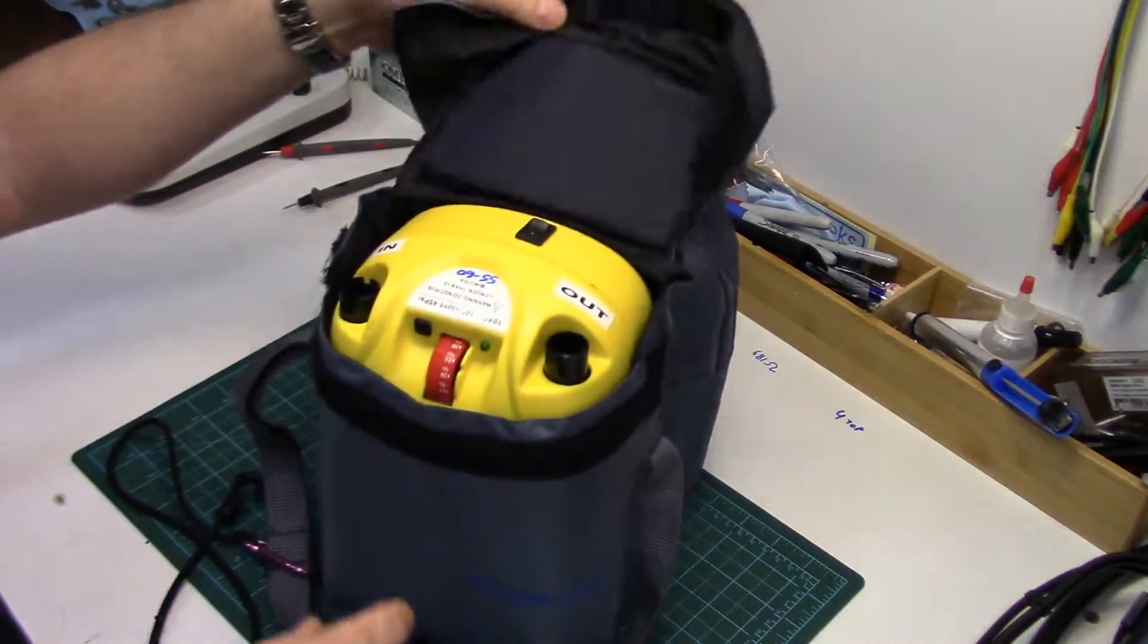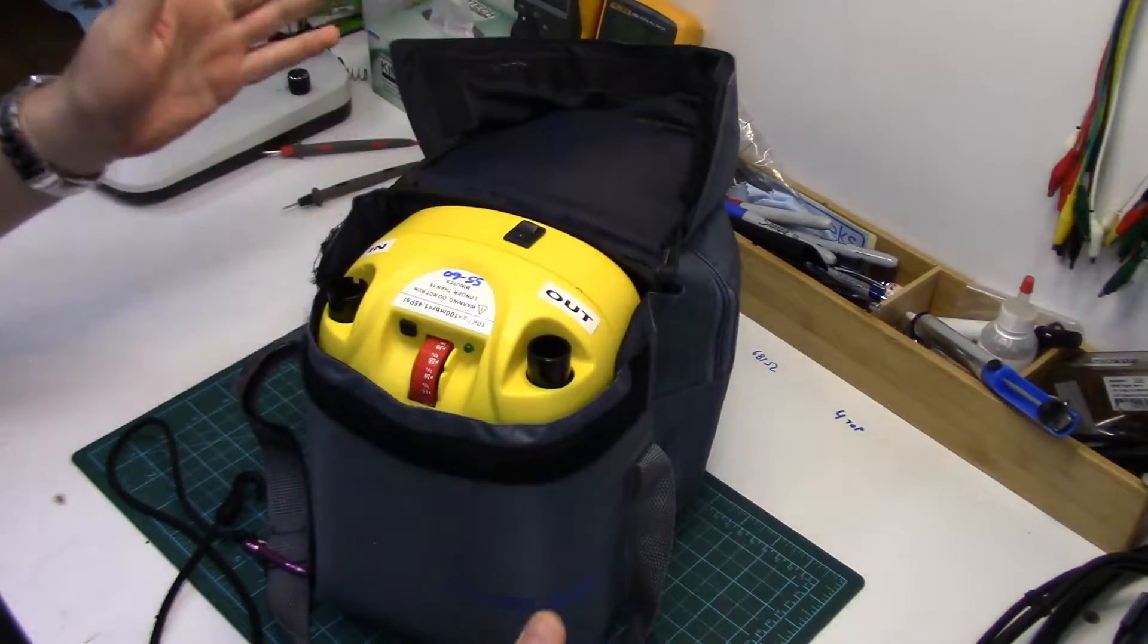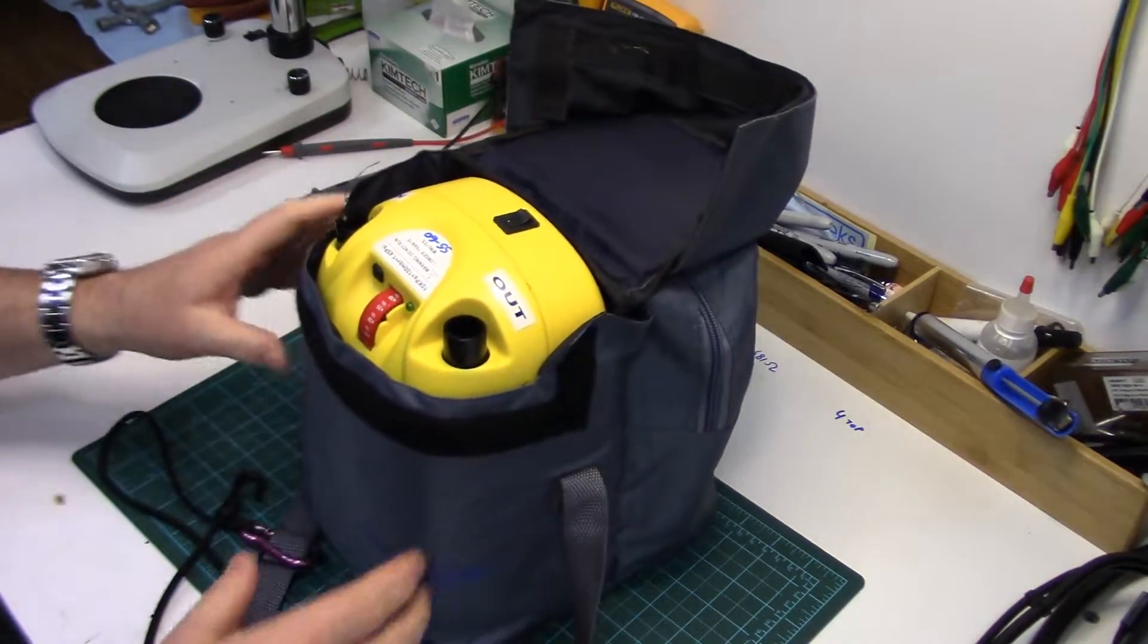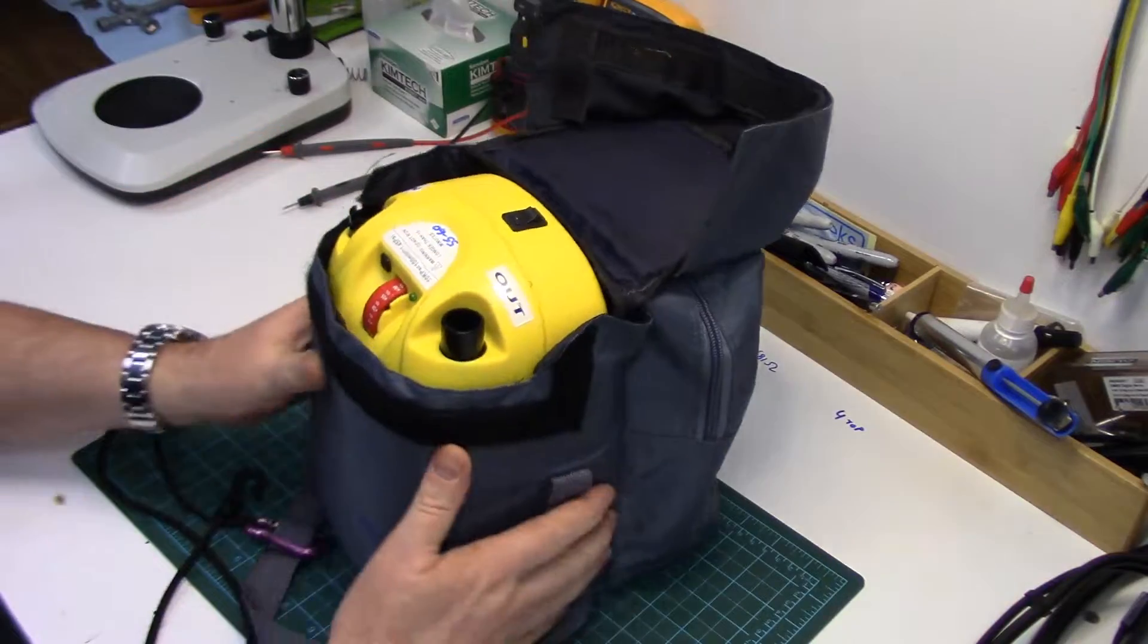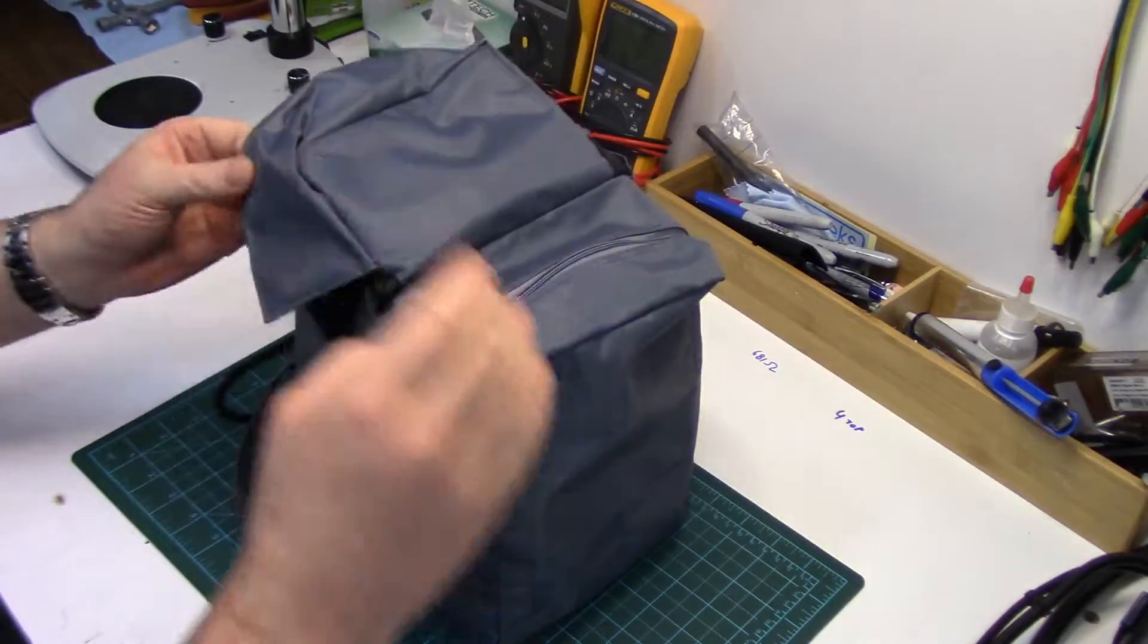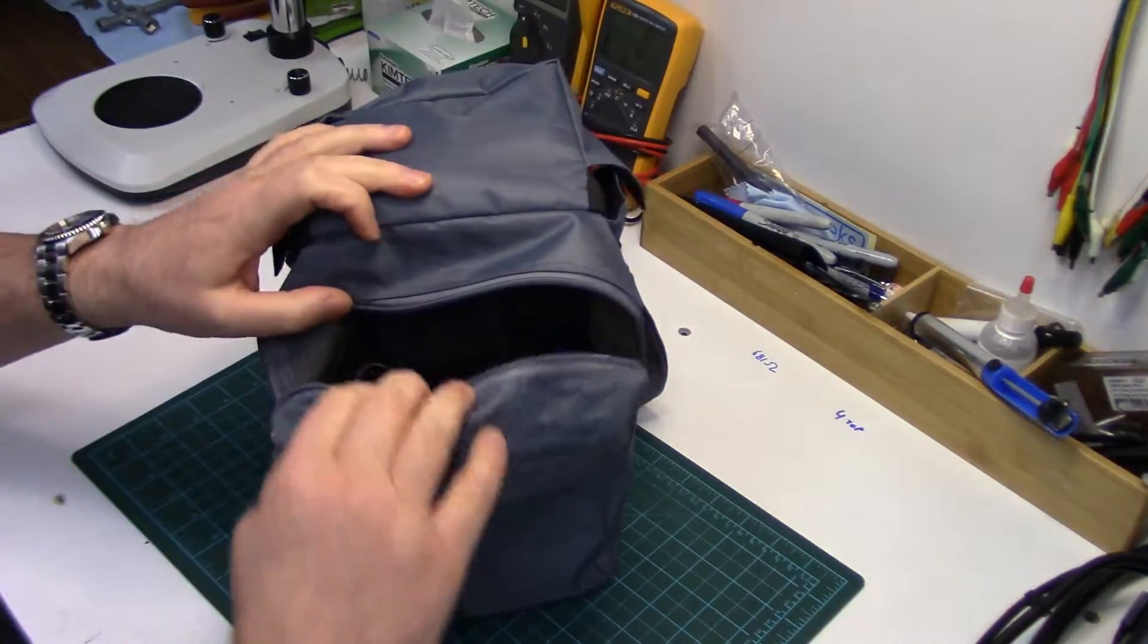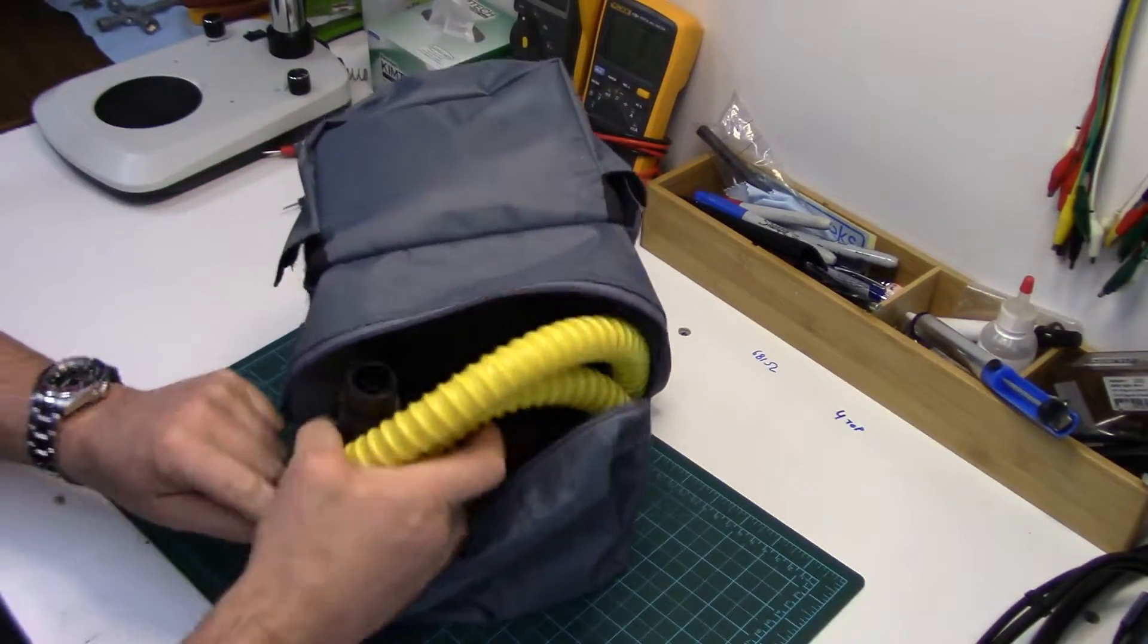Howdy folks, yesterday I showed you this two-stage air pump, inflatable pump, that we demoed filling up a kite with using a 3S LiPo battery. I mentioned they're kind of cool inside and we might want to take a look at it. So that's what we're going to do today.